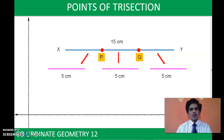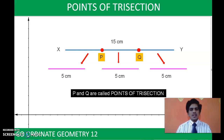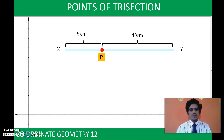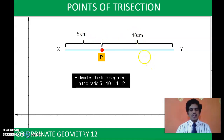When you have a line segment and you want to trisect it — that means divide it into three equal parts — you have to locate two points called points of trisection. Taking point P: the distance from X to P is 5 cm, and from P to Y is 10 cm. So P divides XY in the ratio 5 is to 10, which simplifies to 1 is to 2. Now taking Q: the distance from X to Q is 10 cm and from Q to Y is 5 cm, so Q divides XY in the ratio 10 is to 5, which is 2 is to 1.